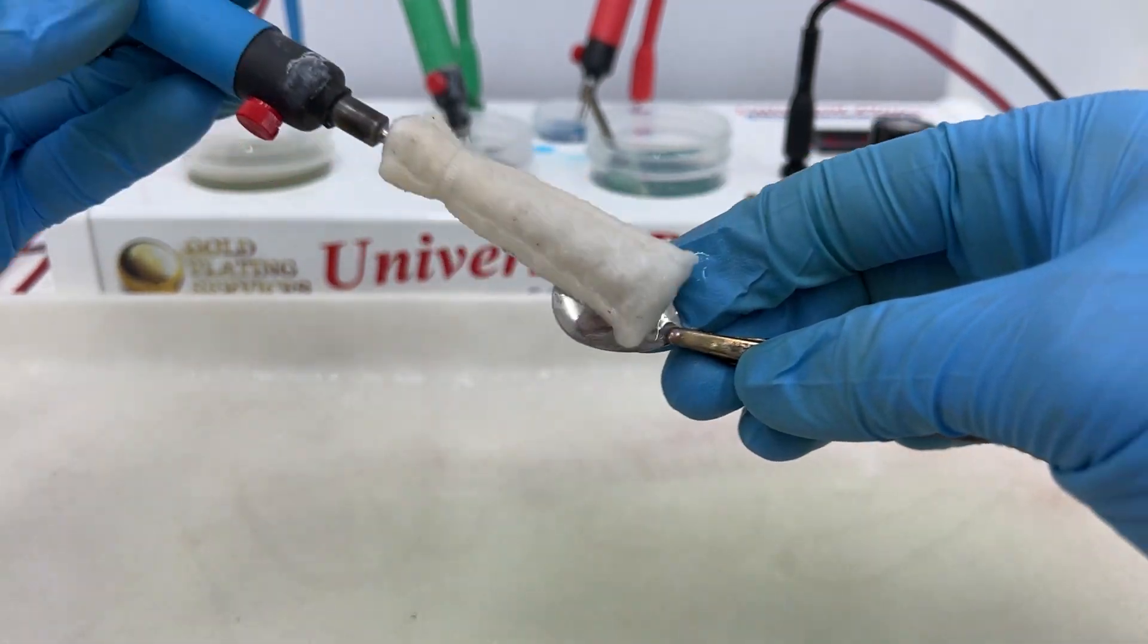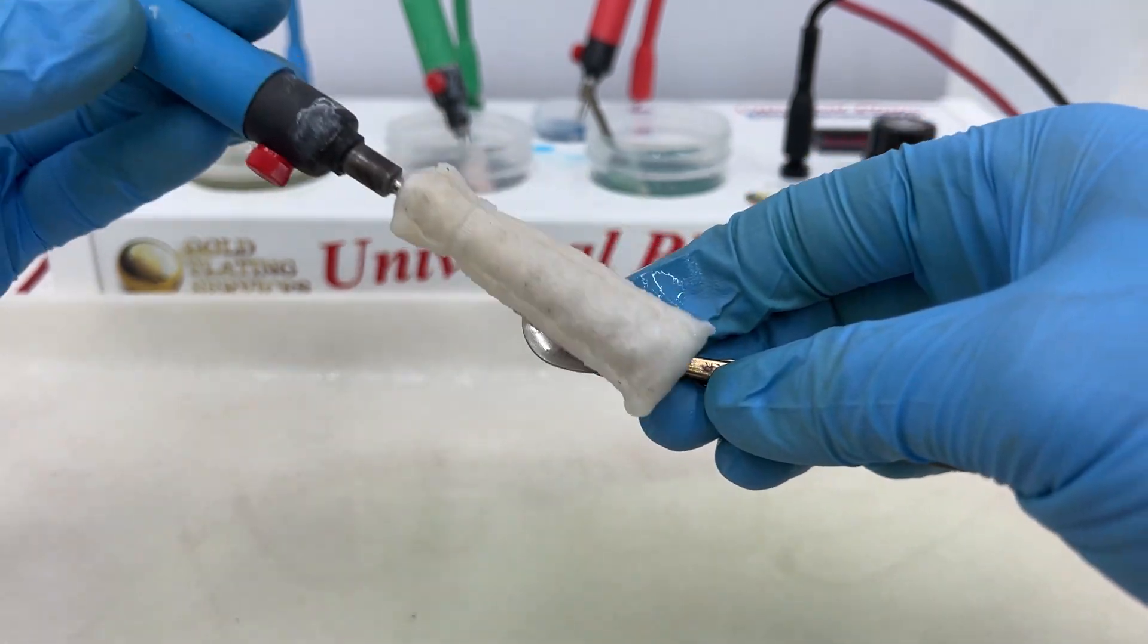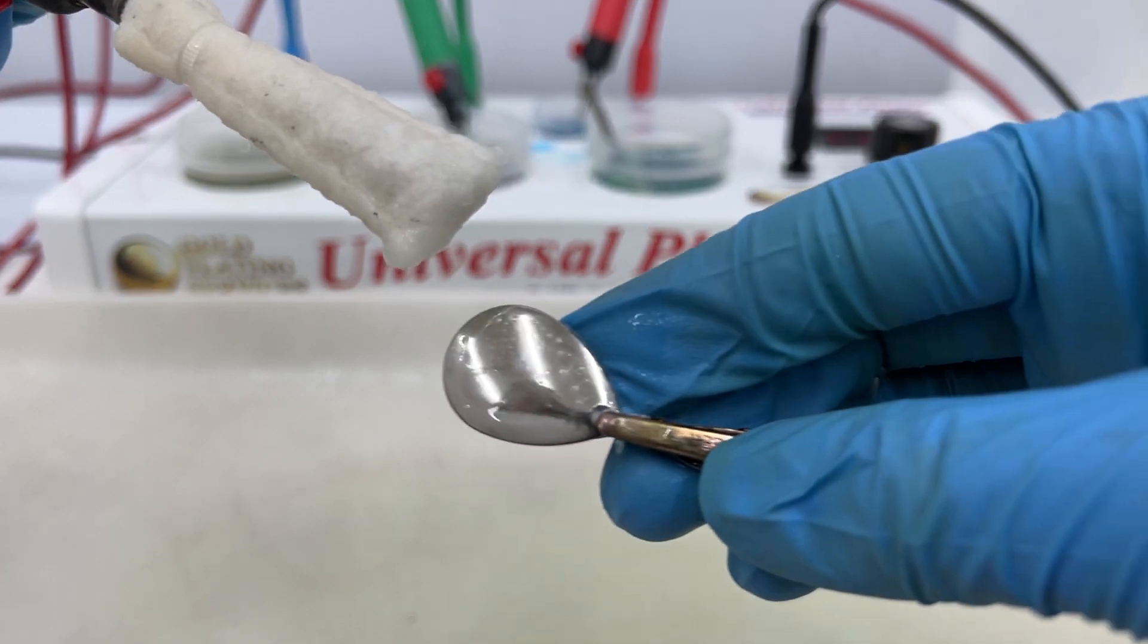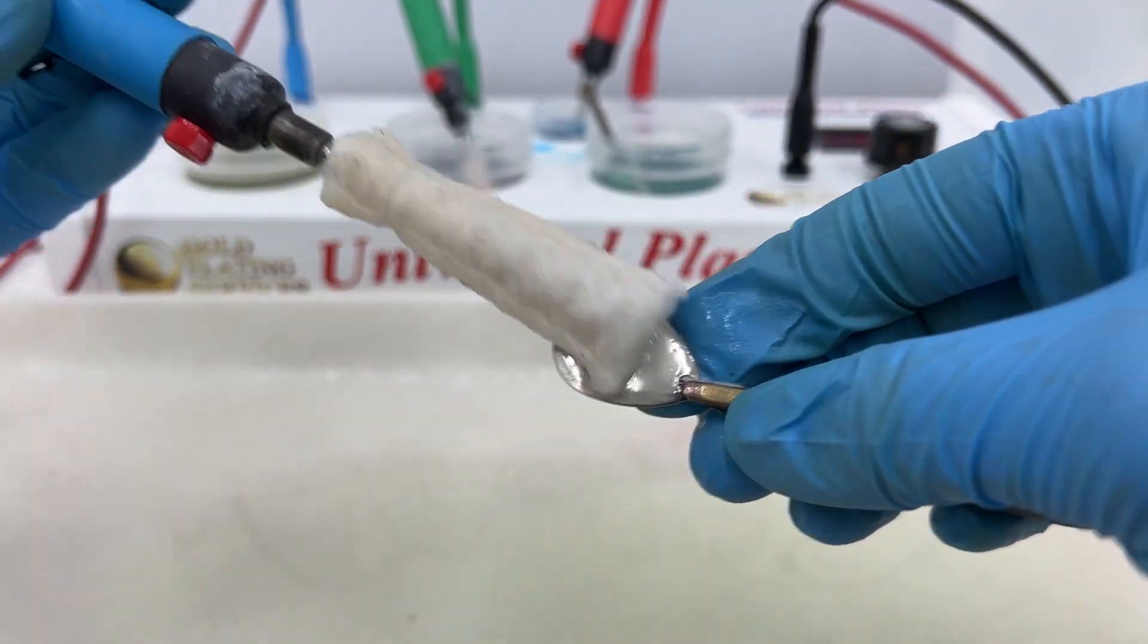We'll electro clean our part at six volts. That's working really well, you can see all those bubbles - that means the electro clean is working.